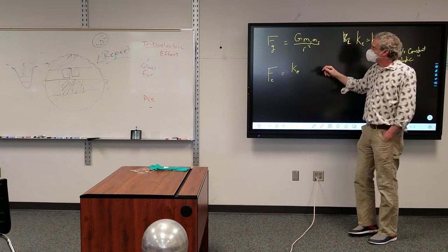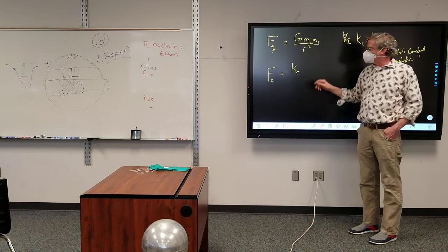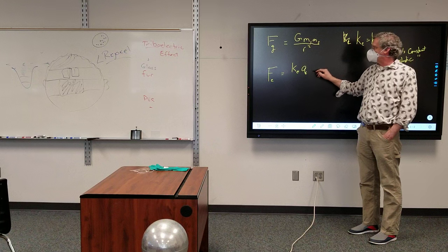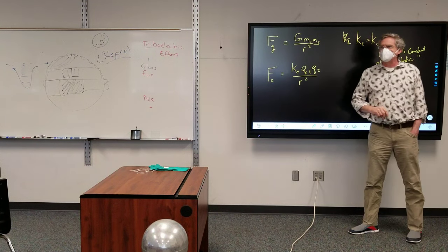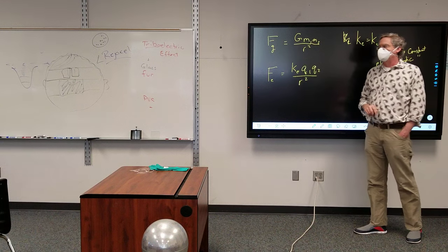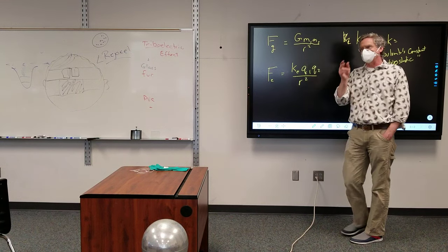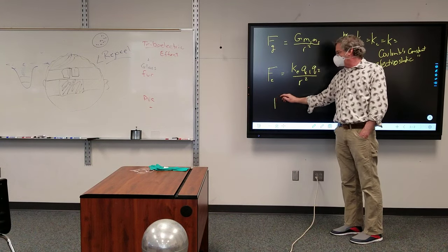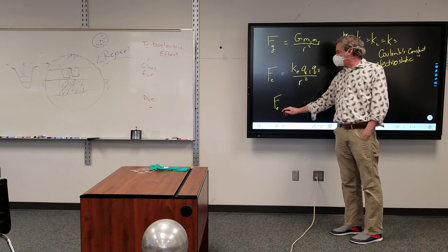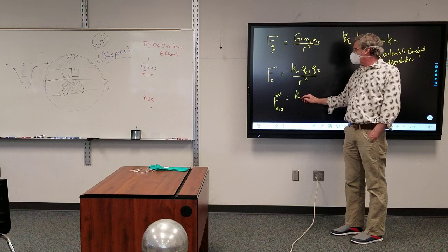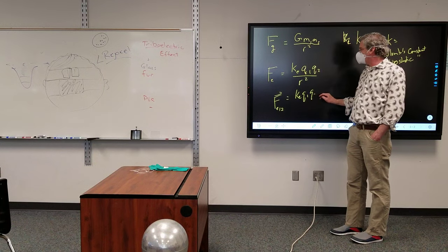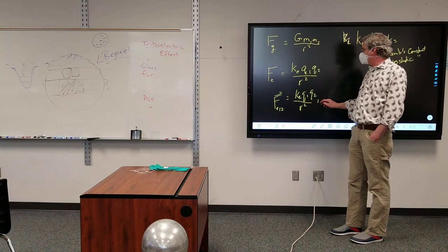Except we're not dealing with mass this time, we're dealing with charges. Q1, Q2, multiplied by R squared times R subscript 2. All right, if we want to put the vector piece into it, the electric force on charge 1 from charge 2 would be k_e Q1 Q2 over R squared, R hat 1-2.